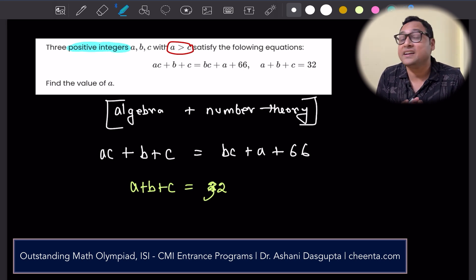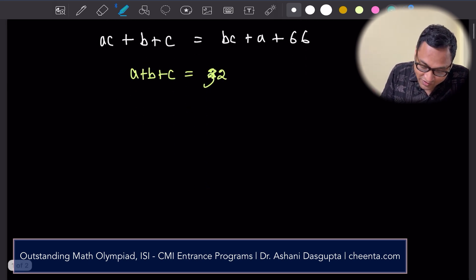In this problem the clue is it's given that these are positive integers. So let's see how we can solve this.